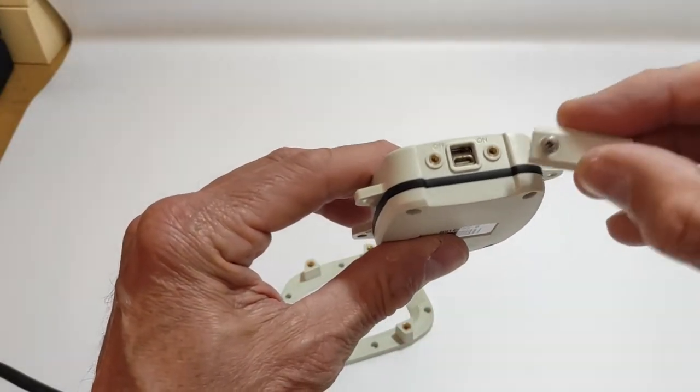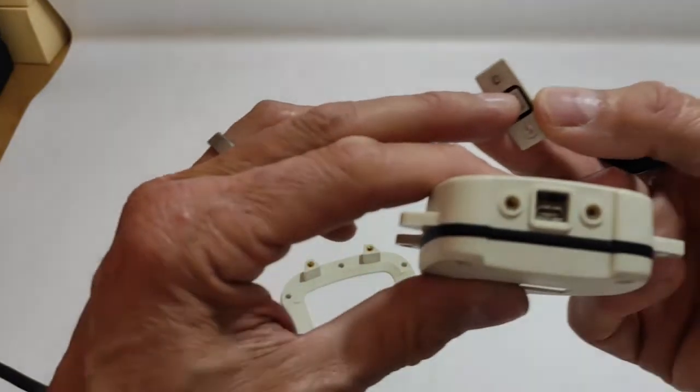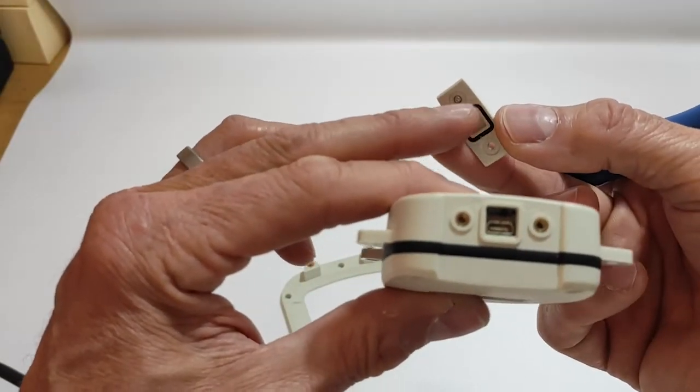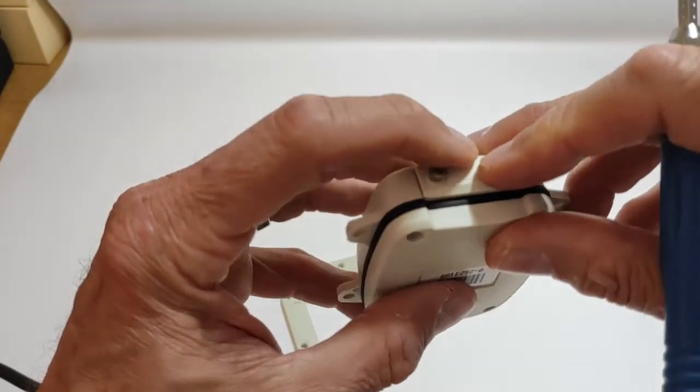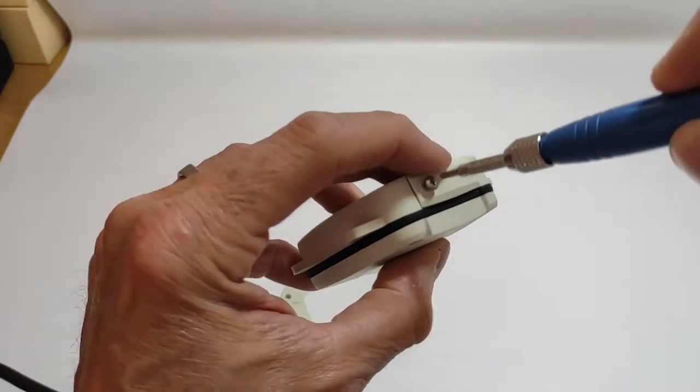Put that back on, the small protection. Make sure that the joint is here inside. Make sure it is there. It's very important to make the device waterproof. And we are going to close it.